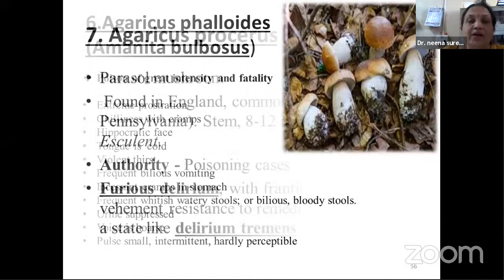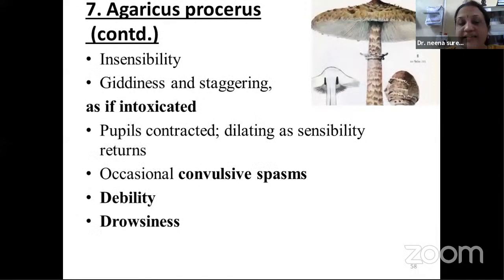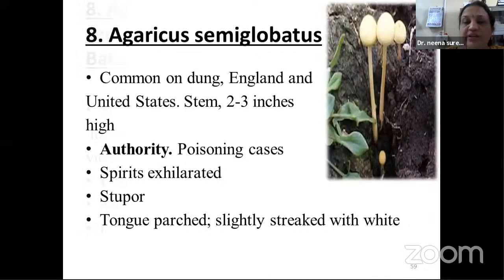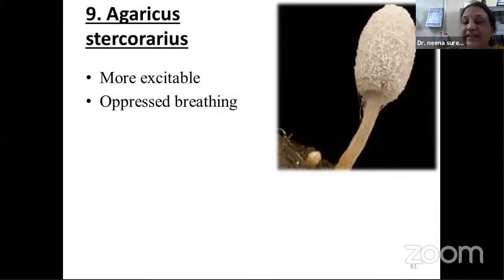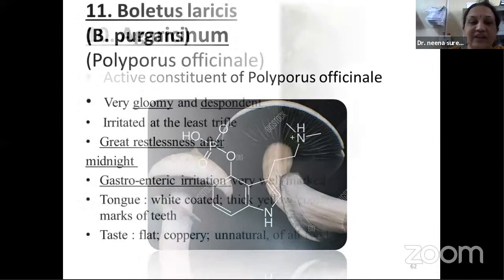Agaricus procerus: from poisoning cases — furious or violent delirium with features of delirium tremens; feels as if intoxicated; convulsive spasms; debility; drowsiness. Agaricus semi-globatus: stupa more marked; spirits exhilarated; tongue parched or cracked with slight white coating; pain in bowel; miscarriage in the second month; pulse 100 to 120. Agaricus tercorarius: oppressed breathing with more excitability. That completes the nine Agaricus species. Tenth is Agaricinum, the active constituent of Polyporus officinalis.